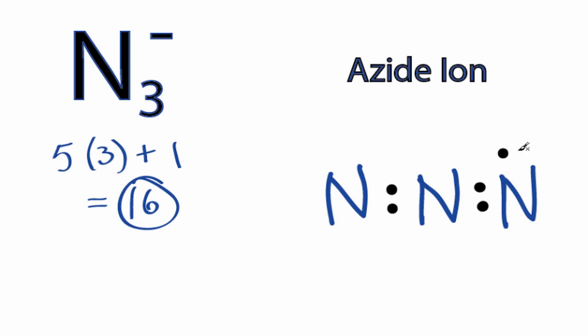We've used 4, and then 6, and 16. So we've used all 16 valence electrons that we have to work with.